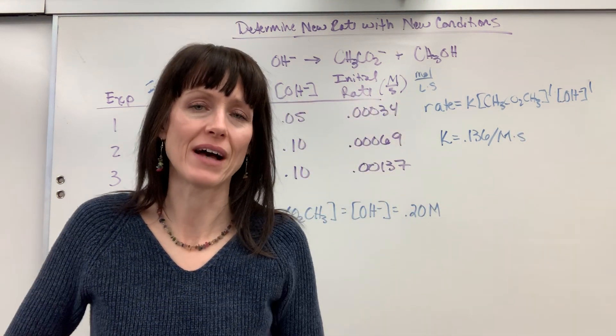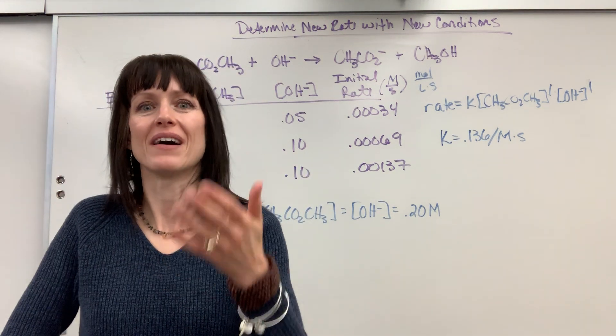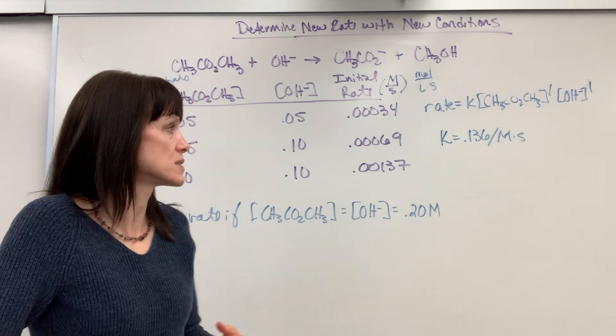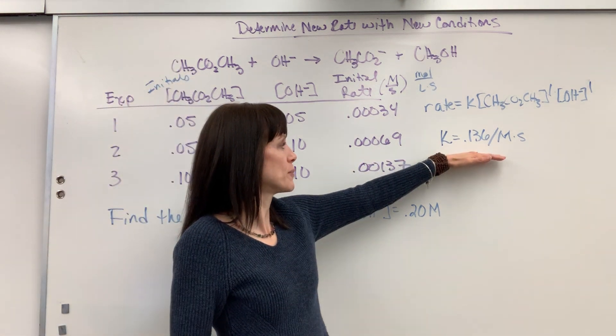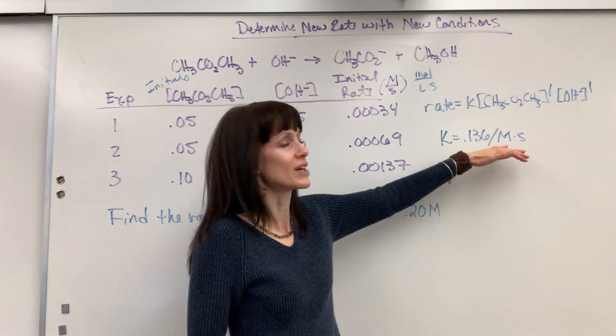Second question that they'll ask is, what's the rate constant and its unit? So watch that video on how to find the value of the rate constant. So we did that. We came up with that the rate constant is 0.136 per molarity times seconds.